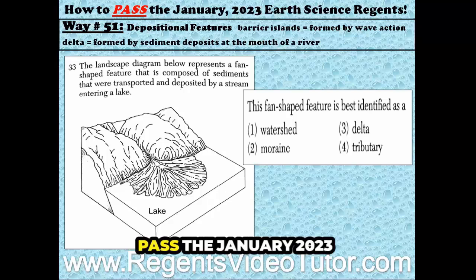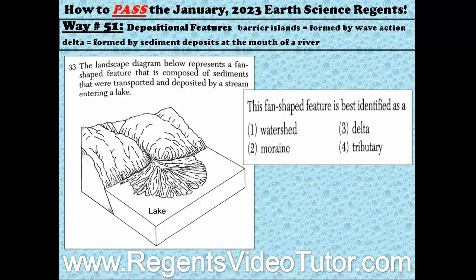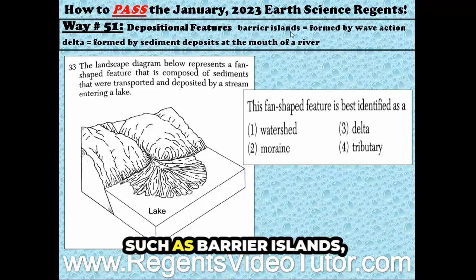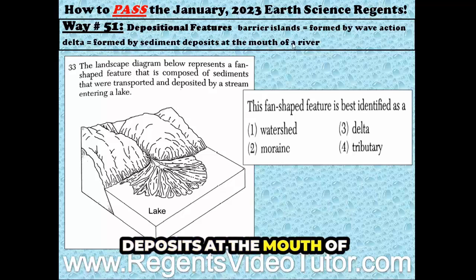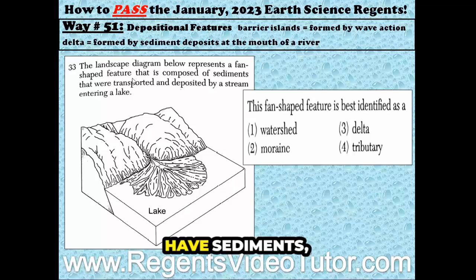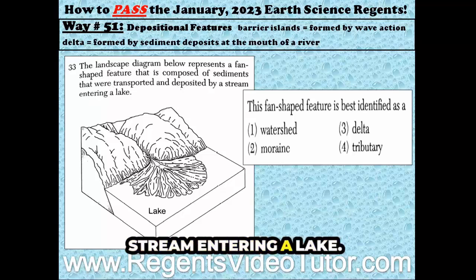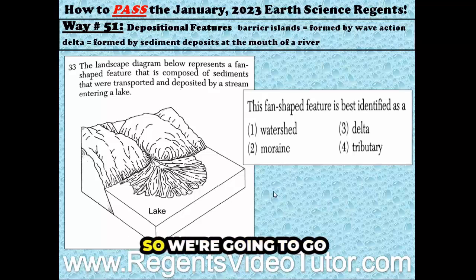Way number 51 on how to pass the January 2023 Earth Science Regents. Depositional features such as barrier islands are formed by wave action, whereas a delta is formed by sediment deposits at the mouth of a river. Here we have sediments that were transported and deposited by a stream entering a lake. That sounds like the mouth of a river, so we're going to go with a delta for choice three.